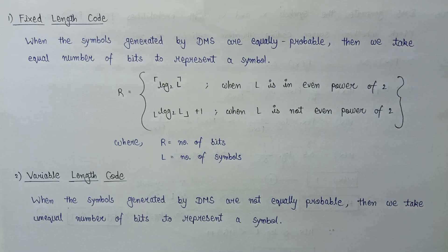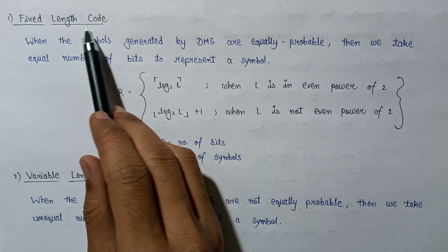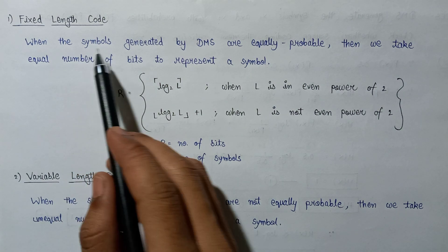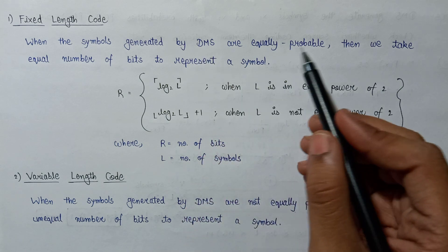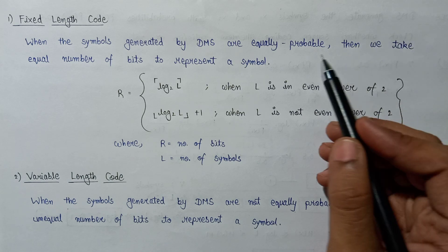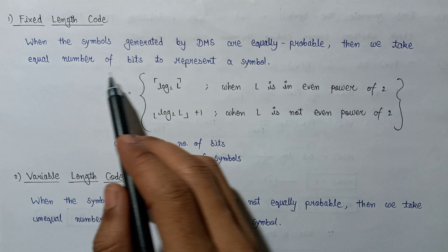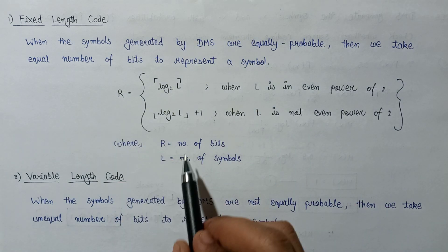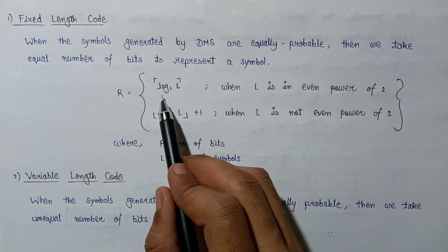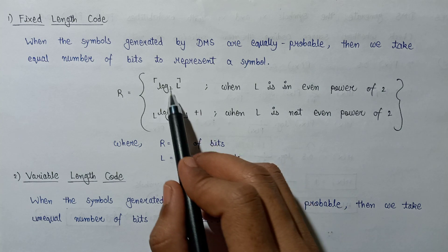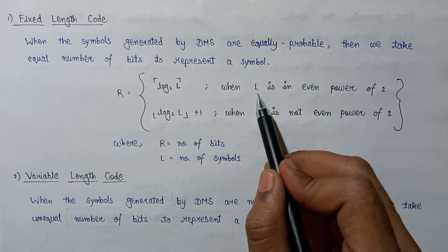Now let's look at two basic concepts related to source coding theorem: fixed length code and variable length code. For a fixed length code, when all symbols generated by the discrete memoryless source are equiprobable, we use an equal number of bits to represent each symbol. The number of bits r = ceil(log base 2 of L), and this formula applies when L is an even power of 2.